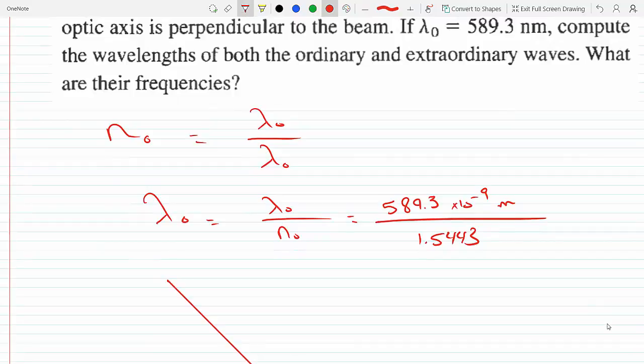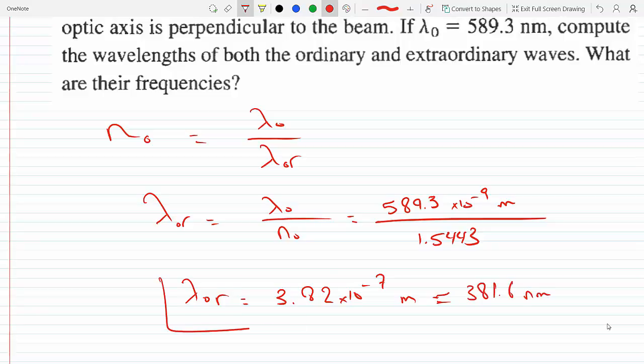And we get our λ_ordinary to be 3.82 times 10 to the minus seven meters, which would make it, if I want to change it to nanometers, about 381.6 nanometers.